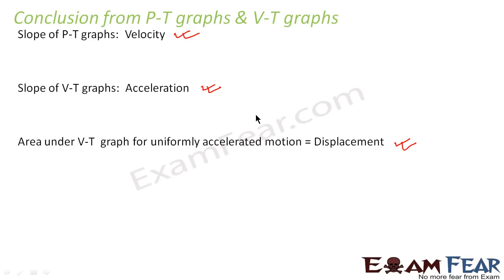So slope of position time graph is velocity. Slope of velocity time graph is acceleration. And area under the velocity time graph is displacement. And remember this is for uniformly accelerated motion.